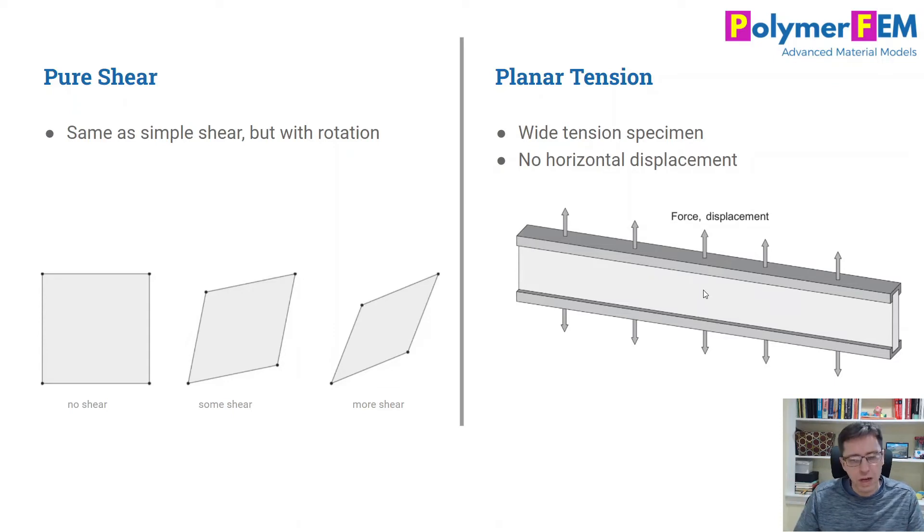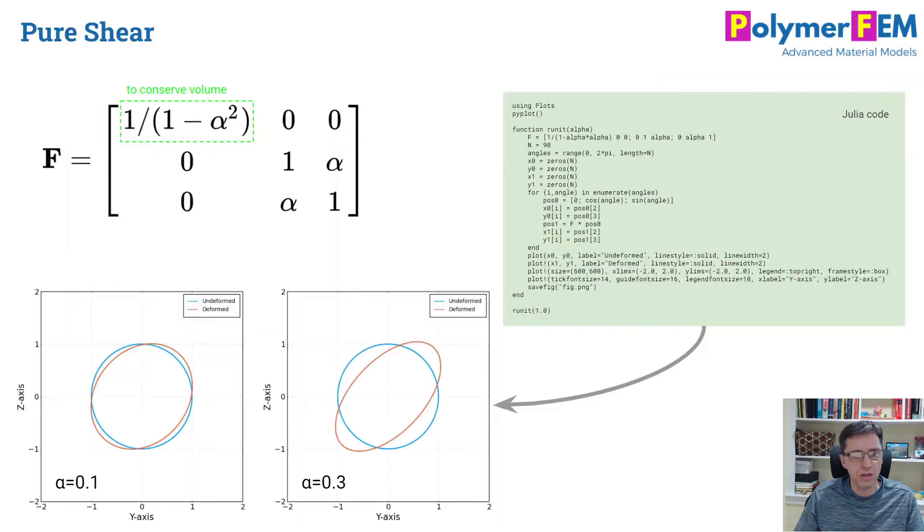So the question really is, how come the shear experiment on the left is similar to the planar tension test on the right? How could that be? This looks nothing like the same, right?